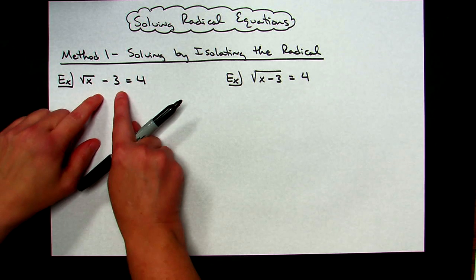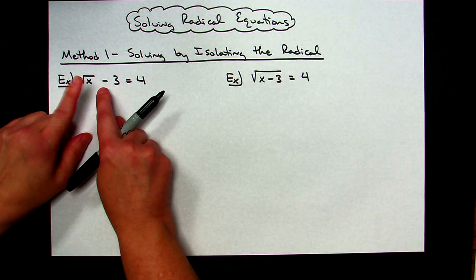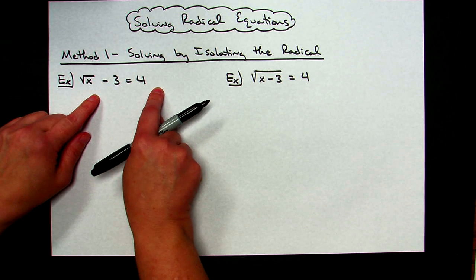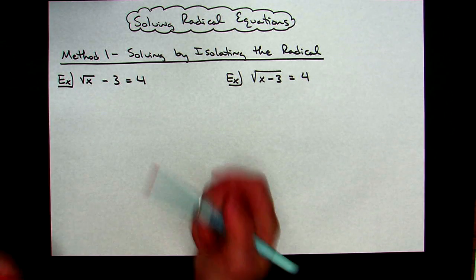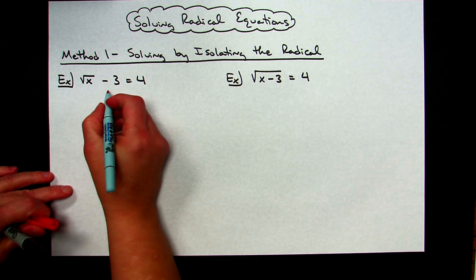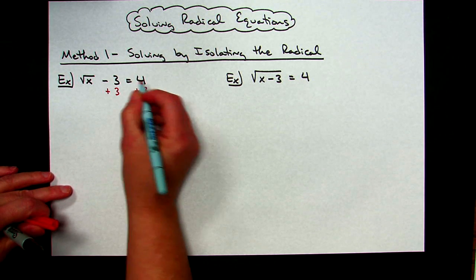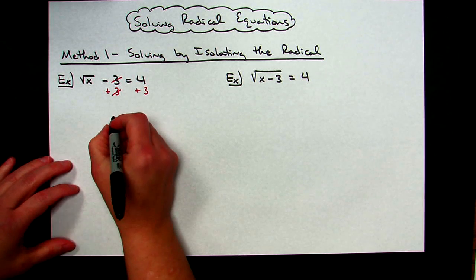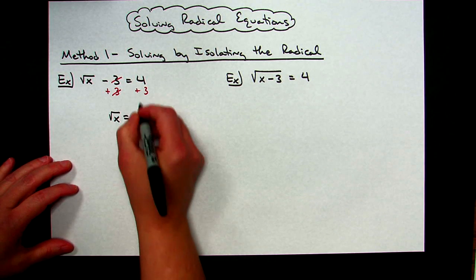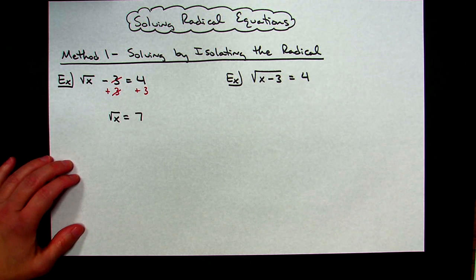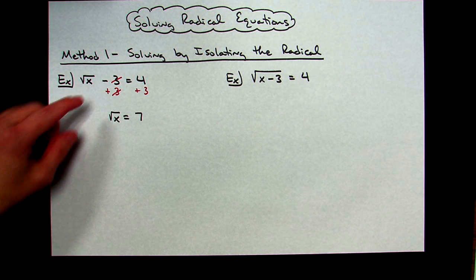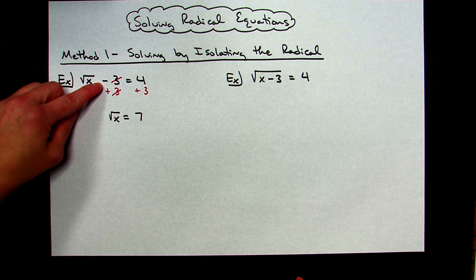In this first example, we have the square root of x minus three equals four. That minus three — we need to isolate the radical, so we need to do the opposite and get it to the other side of the equation. A minus three, the opposite would be adding three to both sides. That crosses out on the left-hand side, so then I have the square root of x is equal to seven.